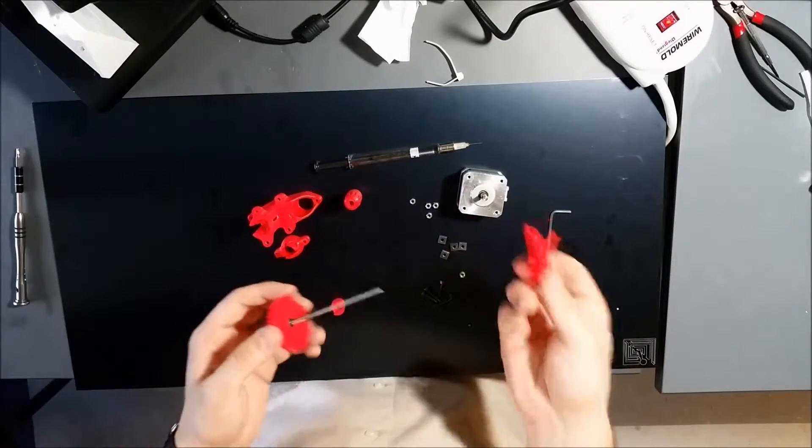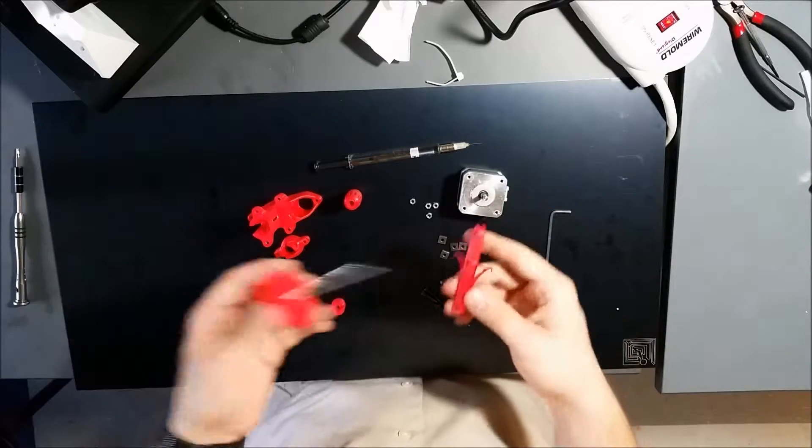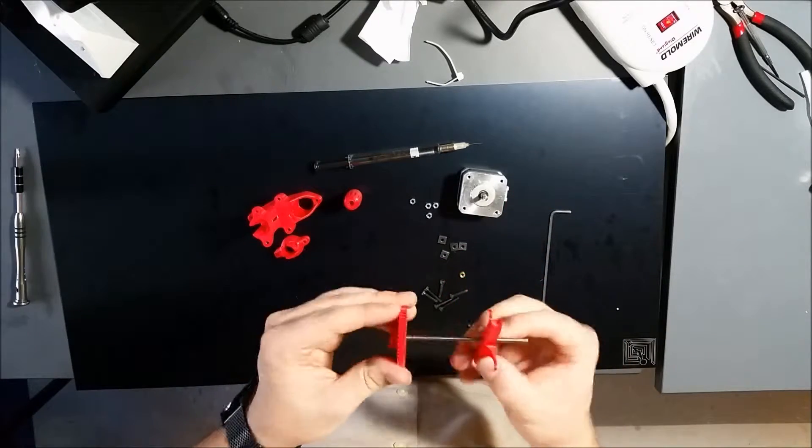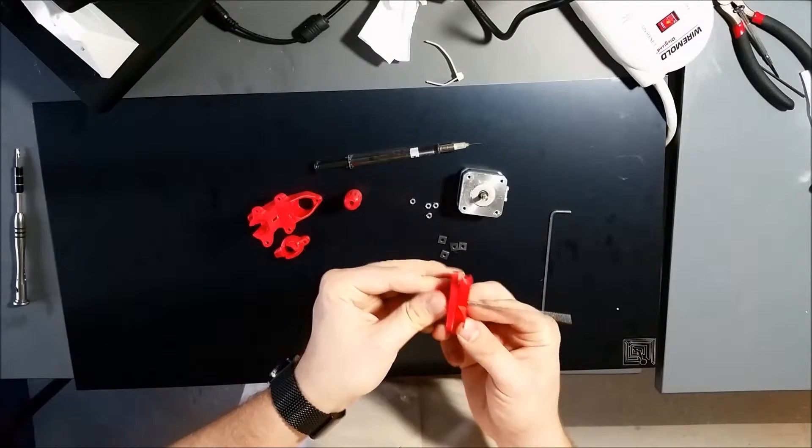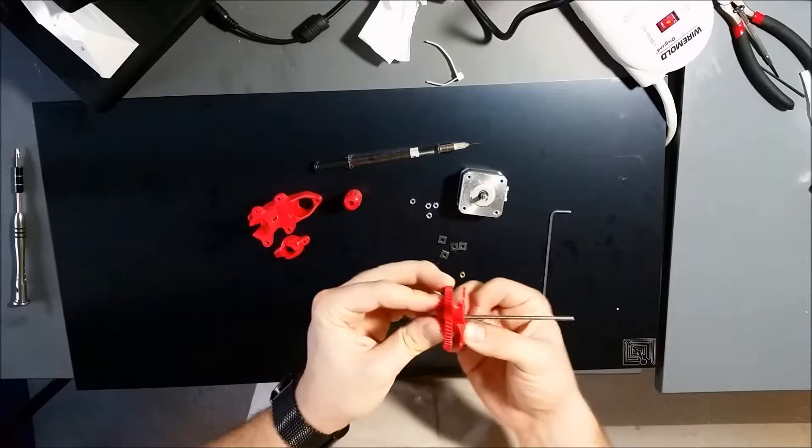And then from there you're going to take the rubber band tensioner, which goes on the top of the repostruder, and slide it down so it's in this orientation. It looks weird but it ends up working later on and you'll see.